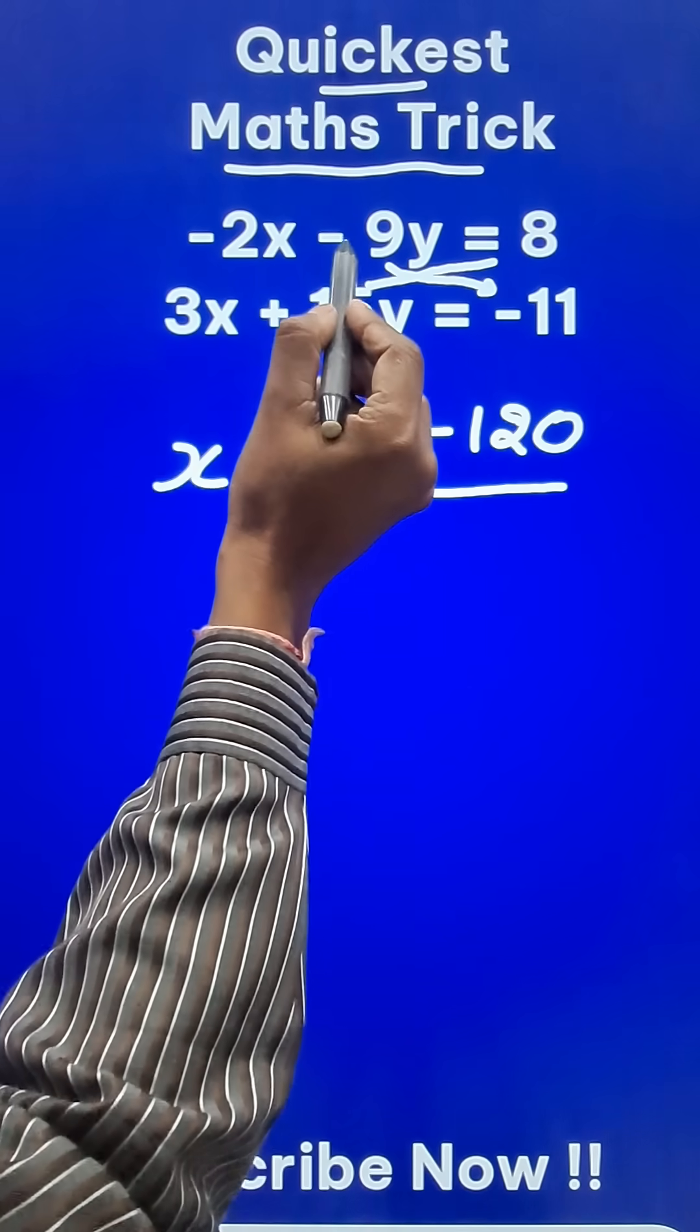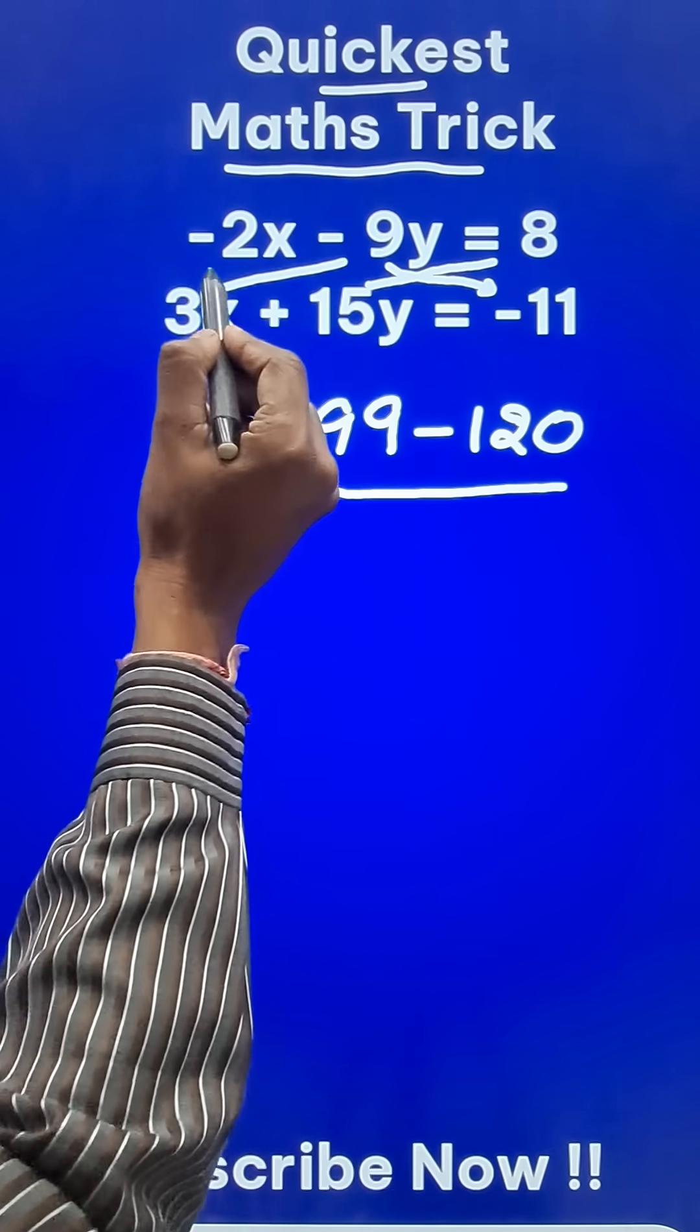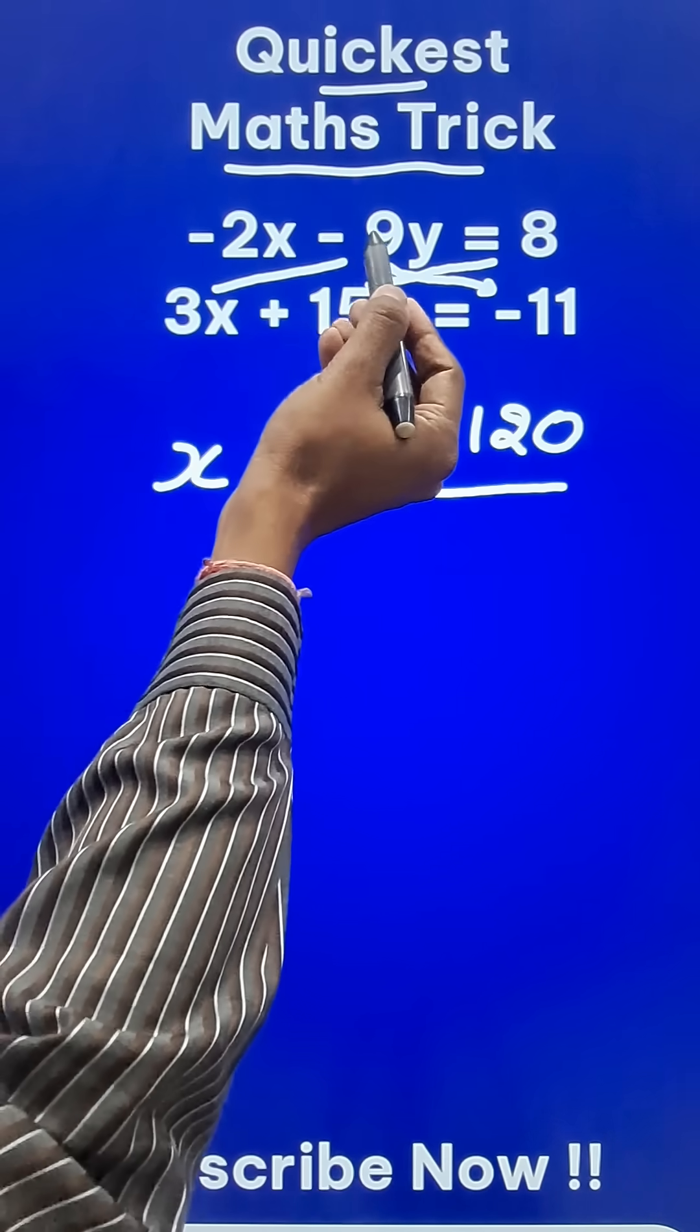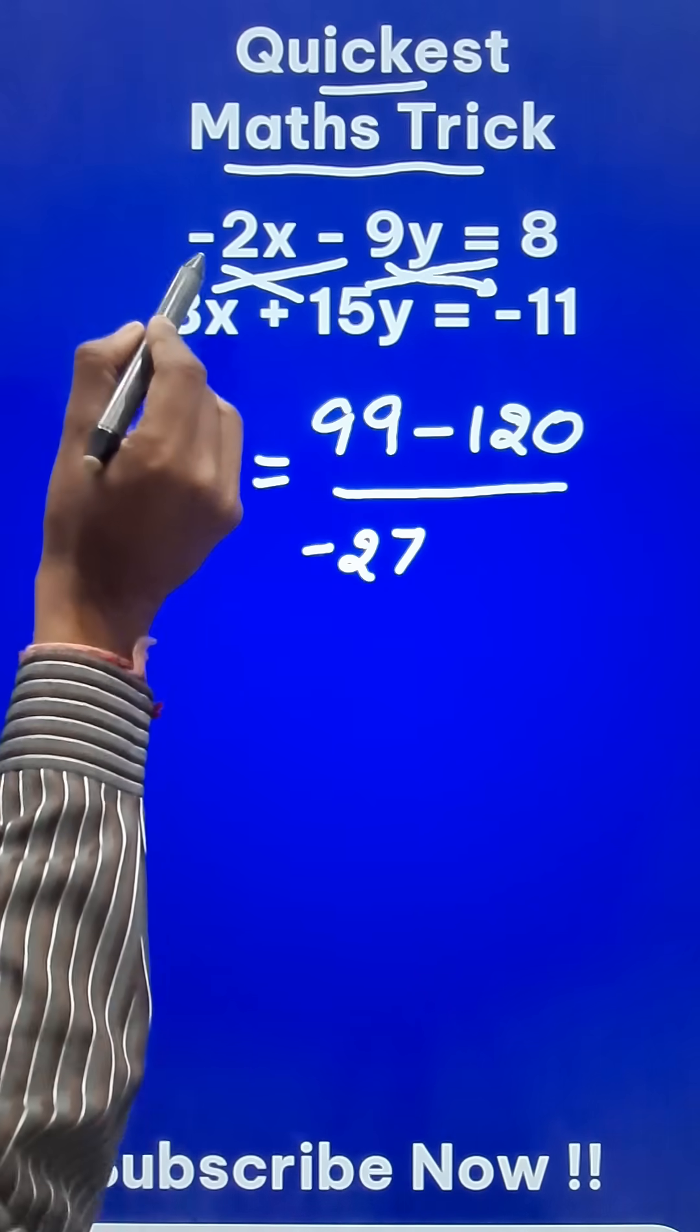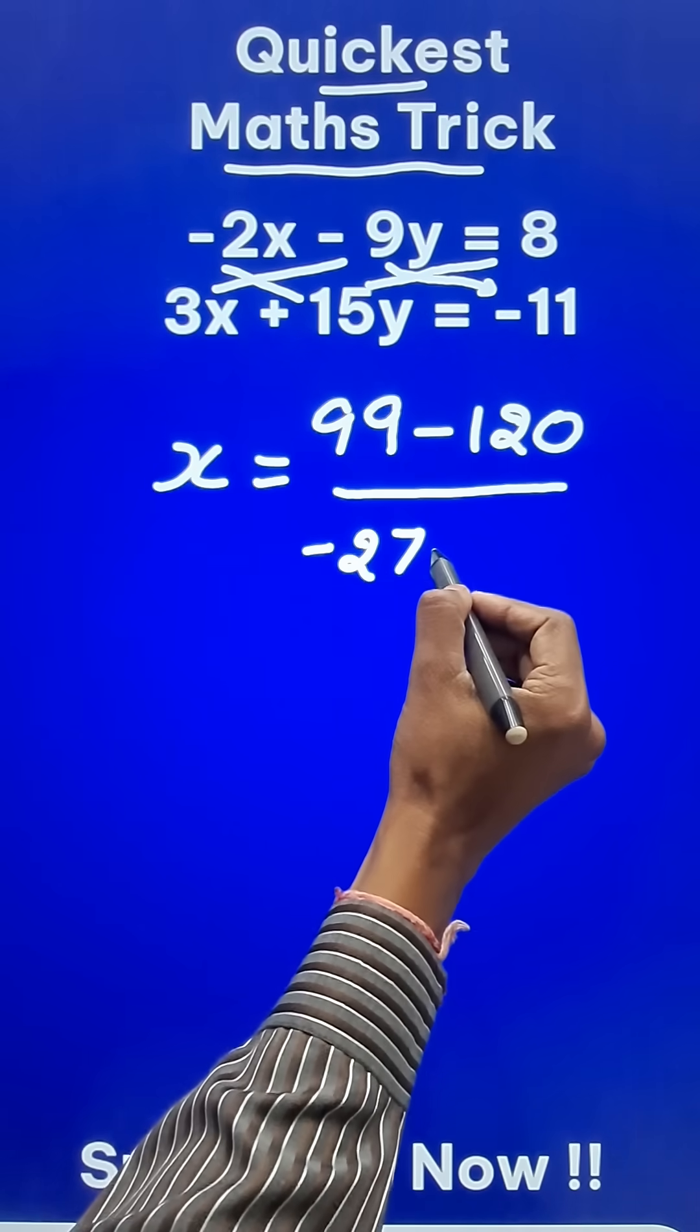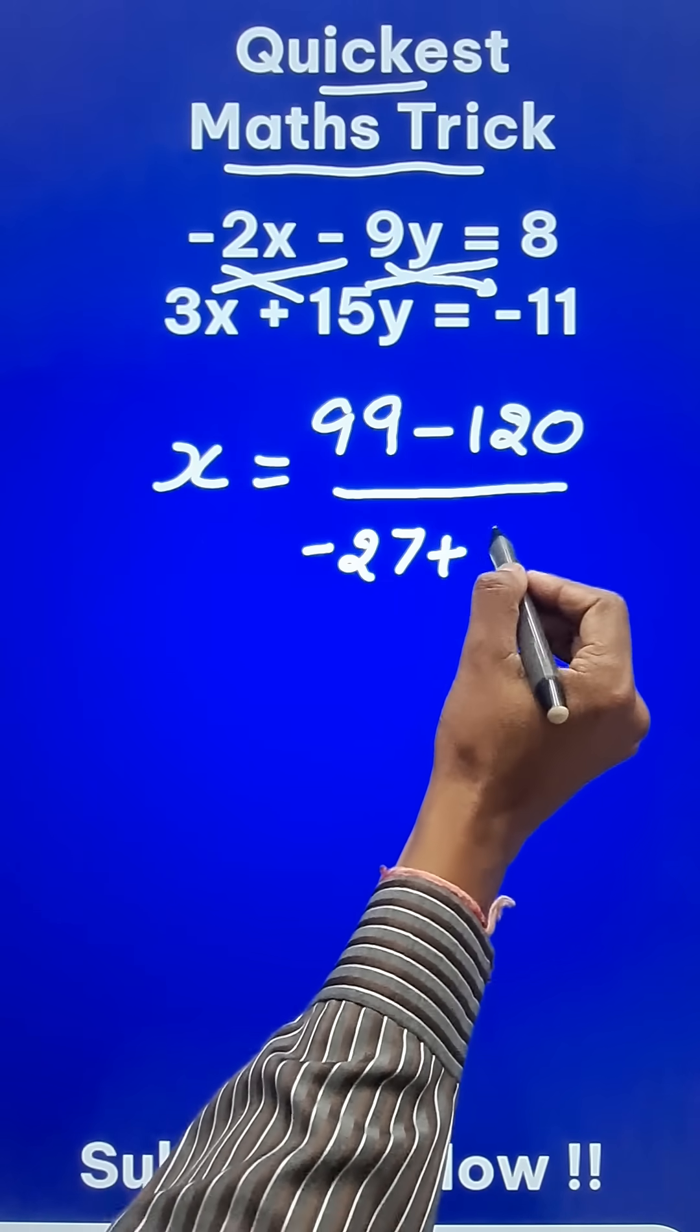In the denominator, you have to go from minus 9 to the left crosswise. Minus 9 times 3 is minus 27. And then the other way round, minus 2 times 15 is minus 30. So minus of minus 30 will give you plus 30.